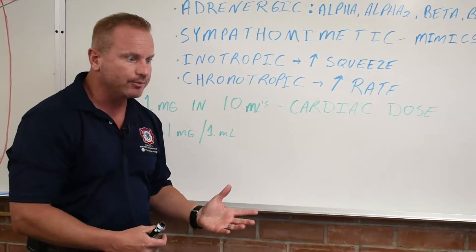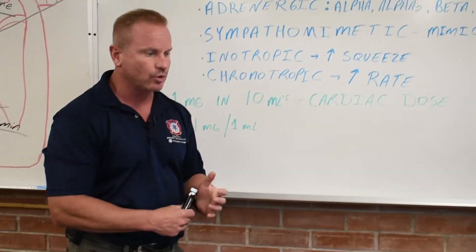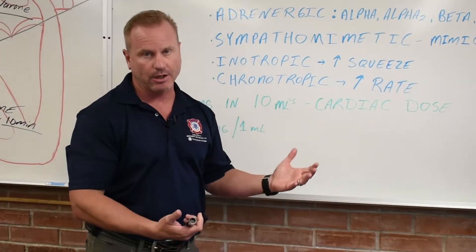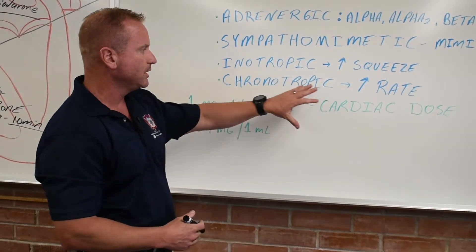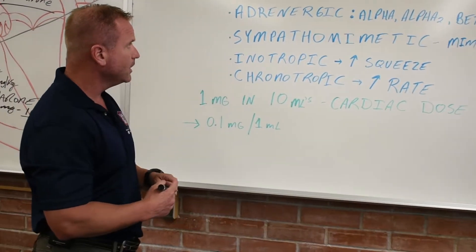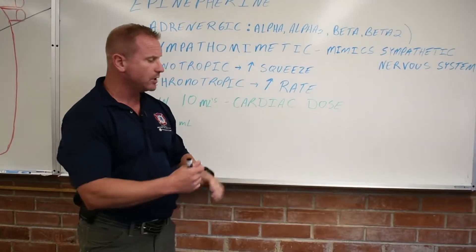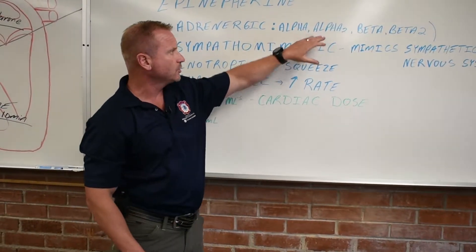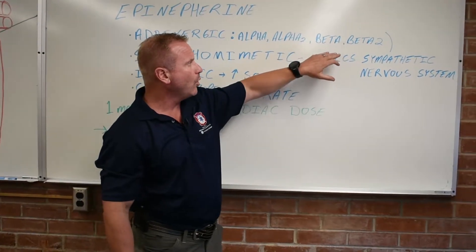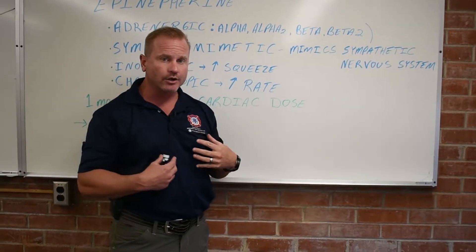You give epi IM to somebody with anaphylaxis or asthma, and you see their heart rate come up a little bit. Usually it's no big deal. It works on the alpha-1, the alpha-2 receptor, so peripheral vasoconstriction, beta-1, which is your heart, beta-2, which is your lungs.